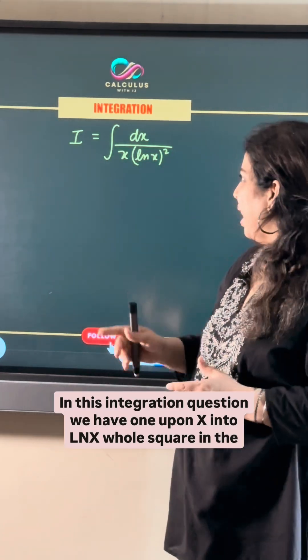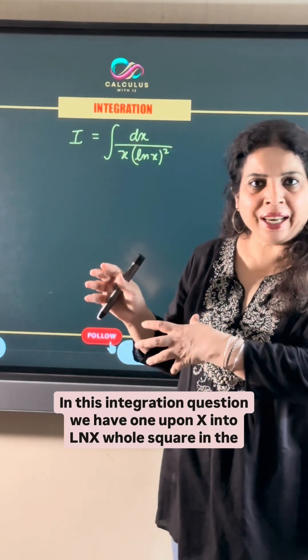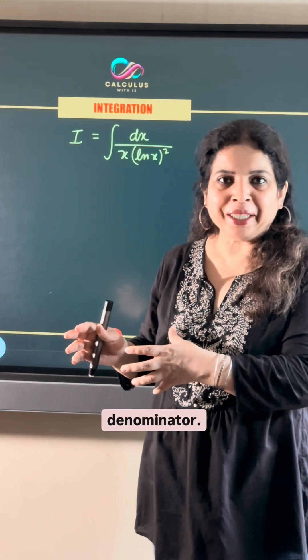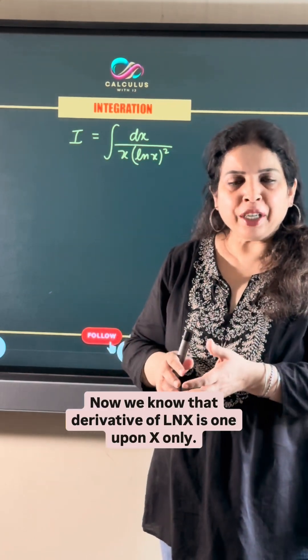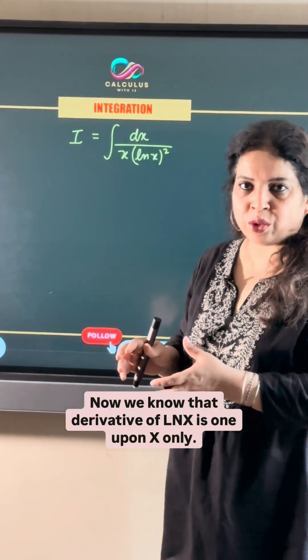In this integration question, we have 1 upon x into ln x whole square in the denominator. Now we know that derivative of ln x is 1 upon x only.